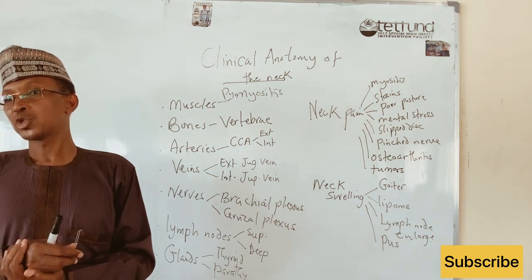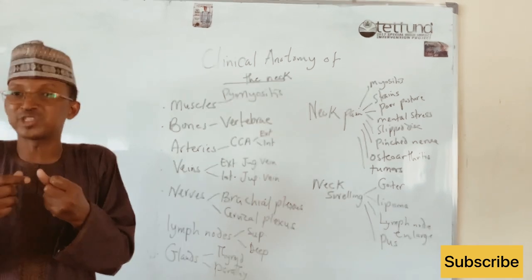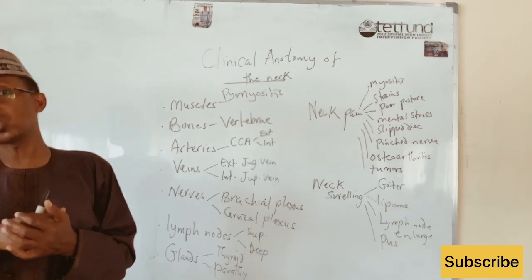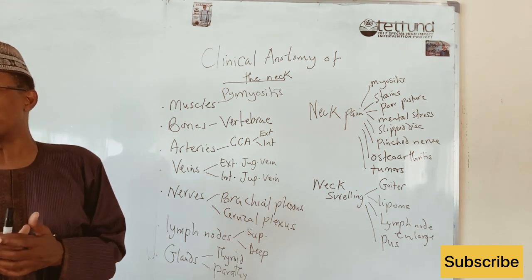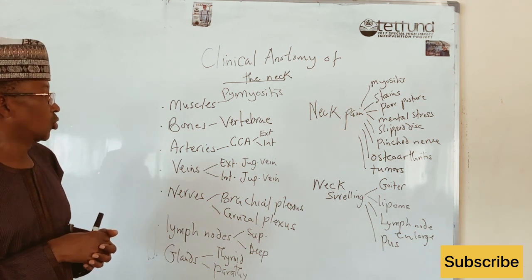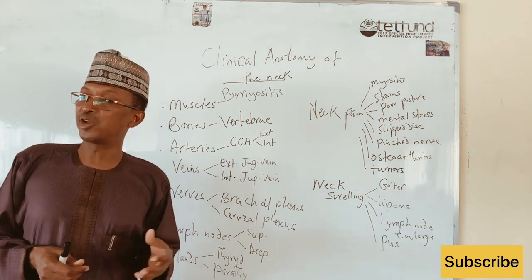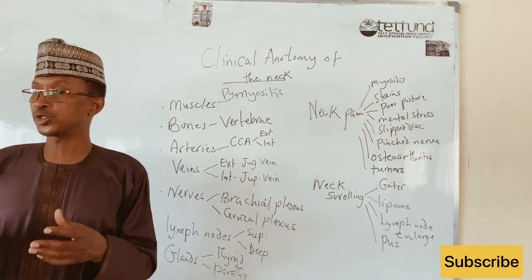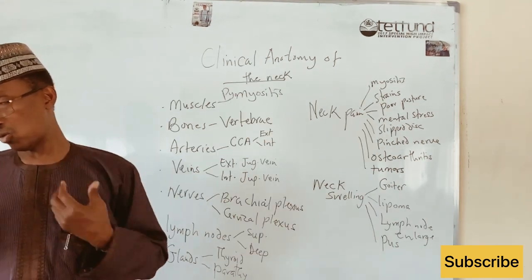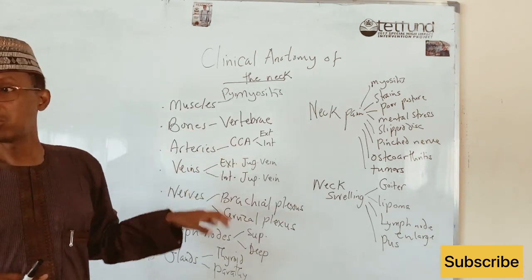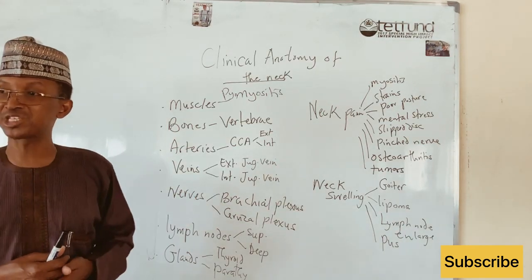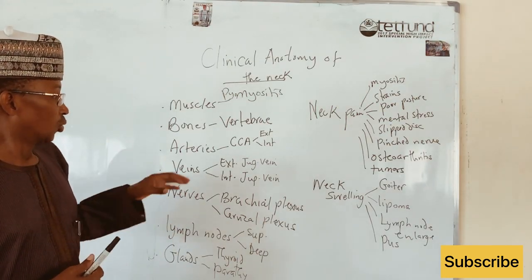Vertebral bones can get crushed during accidents. Because of their close proximity to the spinal cord, fragments of fractured bone may impinge on or injure the spinal cord, damaging spinal nerves related to the fractured bone or the spinal cord itself at the fracture site. The bones can also become inflamed as a result of diseases like tuberculosis. Pulmonary tuberculosis can affect the vertebral bones in the cervical region, causing osteomyelitis of the cervical vertebral bones.